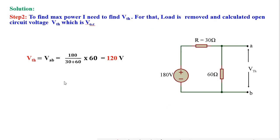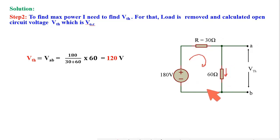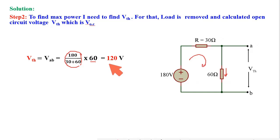Now to find out the maximum power at load, I need to calculate VTH. This is the same circuit; I have already calculated that the value of R is 30 ohm. To calculate VTH, the load has been removed and the voltage across these two points is VTH. This voltage equals the current through the 60 ohm resistance multiplied by 60 ohm. The current is due to the 180 volt source: 180 divided by 30 plus 60. That current multiplied by 60 ohm gives VTH, which is 120 volt.